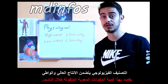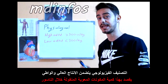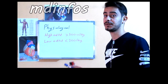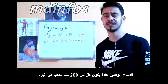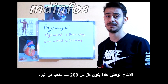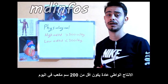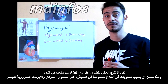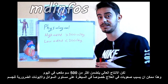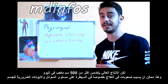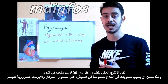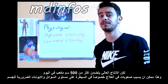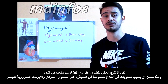Physiological classification includes high output and low output. Low output is usually less than 200 cc per day, but high output is more than 500 cc per day, and that can be quite challenging, especially in controlling fluids and electrolytes.